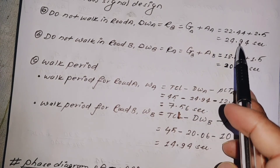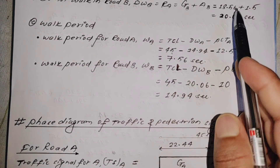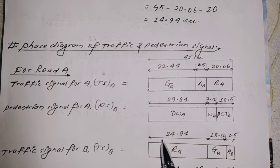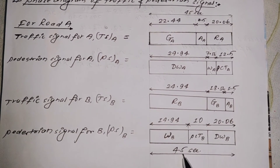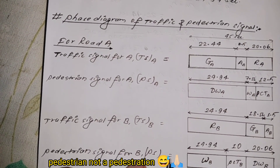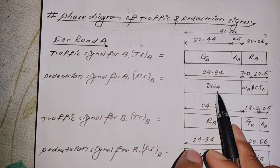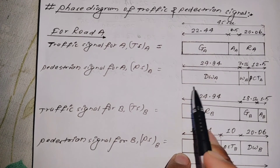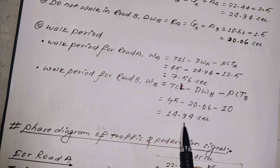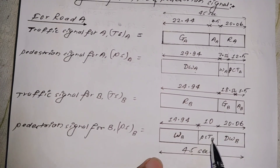For Road B: Green time G_B = 18.56 seconds, Amber A_B = 1.5 seconds. Pedestrian signal Road B: Do Not Walk = 20.06 seconds, Walk = 14.94 seconds, Pedestrian Clearing Time = 10 seconds. Total cycle = 45 seconds.